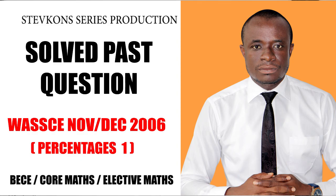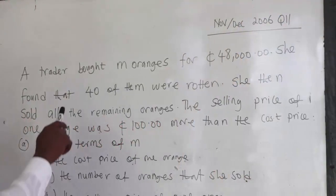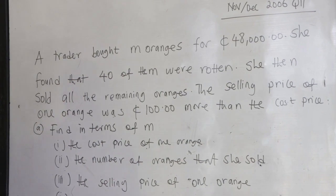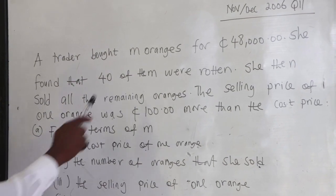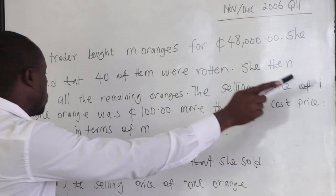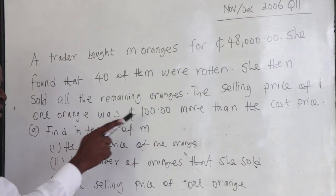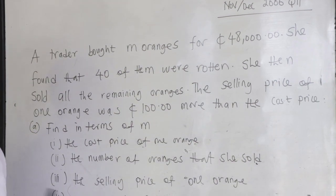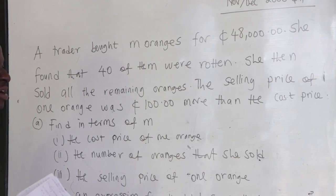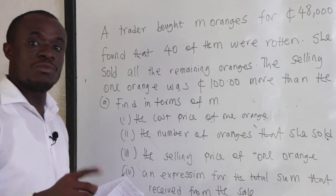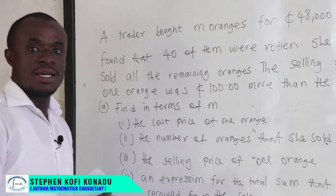Let's consider question number 11 from 2006. It says that a trader bought M oranges for 48,000. She found that 40 of them were rotten. She then sold all the remaining oranges. The selling price of one orange was 100 CDs more than the cost price. So if the cost price is X, then the selling price of one would be X plus 100.